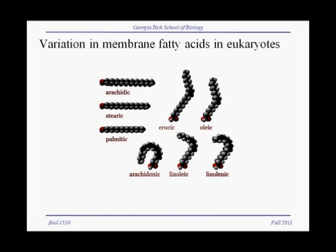Returning to bacteria and eukaryotes, our membranes — the phospholipids and fatty acids — are not all the same. They vary in the kind of fatty acids they have. The fatty acids linked to glycerol in our phospholipids can vary in chain length. Palmitic acid has 16 carbons, stearic acid has 18 carbons, and arachidic acid has 20 carbons.